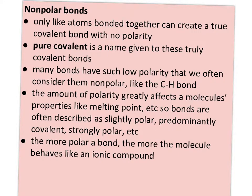Many bonds have such low polarity that we consider them nonpolar, especially in organic chemistry. The carbon-hydrogen bond is very common, and the difference in electronegativity is about 0.3 to 0.35, so we generally consider it nonpolar because it behaves more like a nonpolar bond. The amount of polarity greatly affects molecules' properties like melting point and solubility. Bonds are often described as slightly polar, predominantly covalent, or strongly polar. The more polar a bond, the more the molecule is going to behave like an ionic compound.